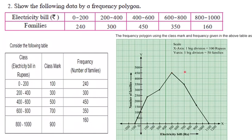Then, 700, 350. X coordinate 700, Y coordinate 350. Then, X coordinate 900 and Y coordinate 160.